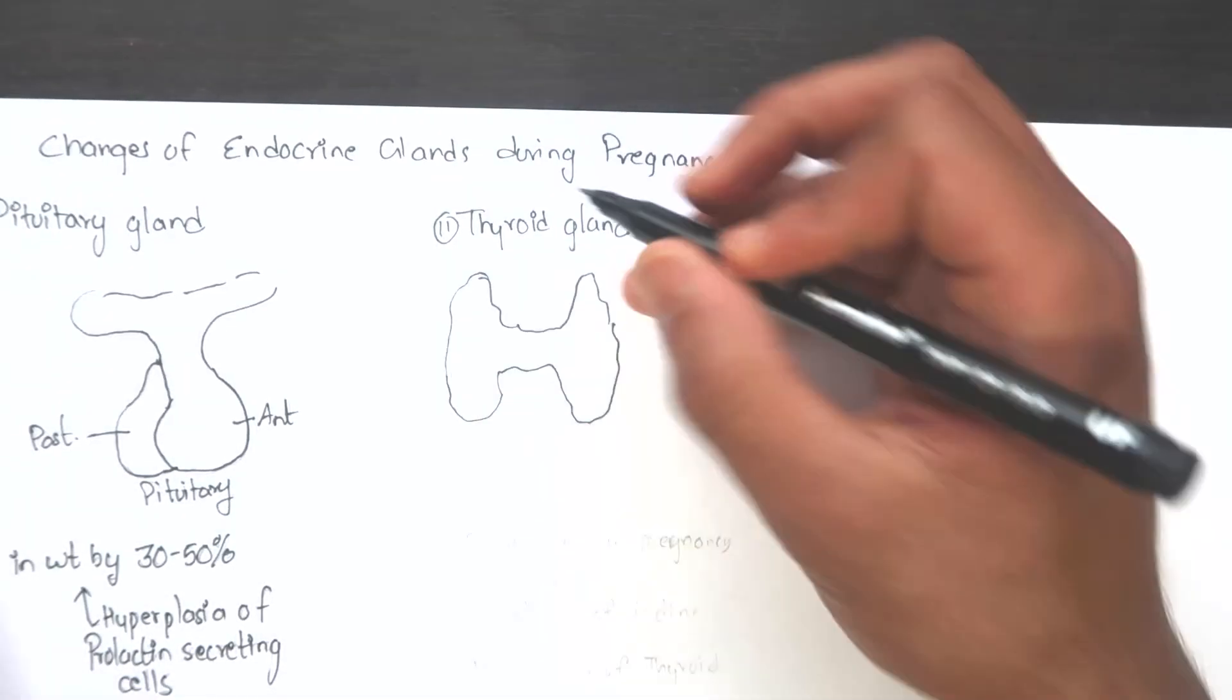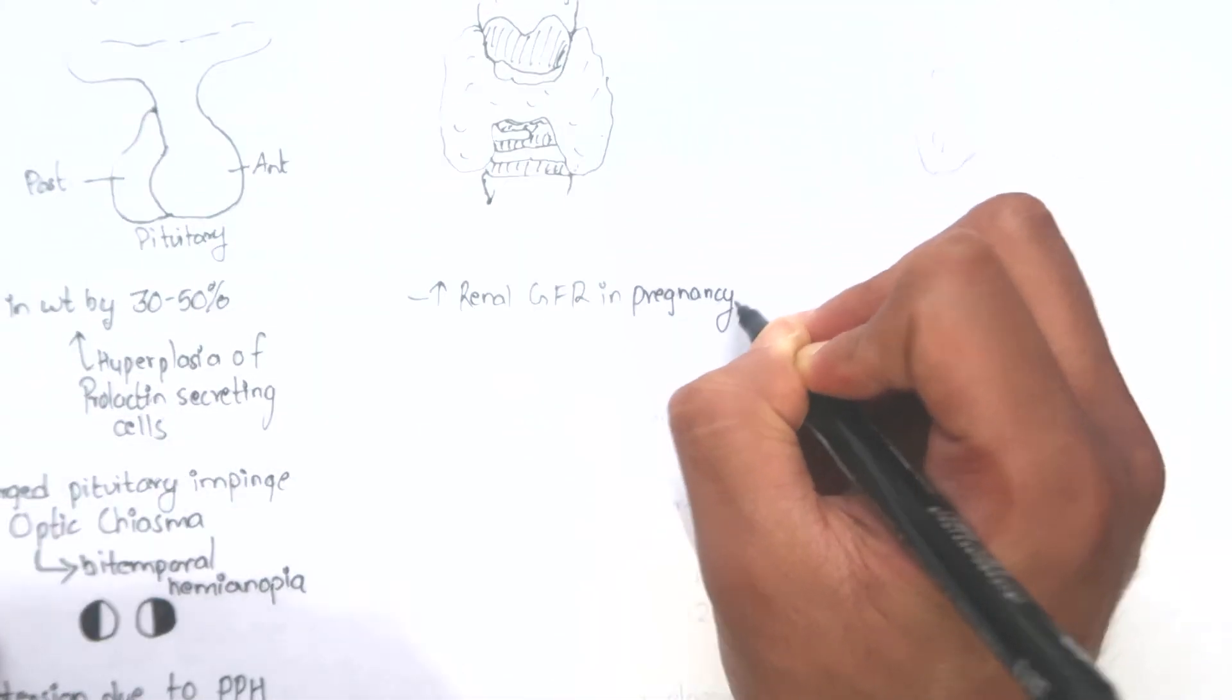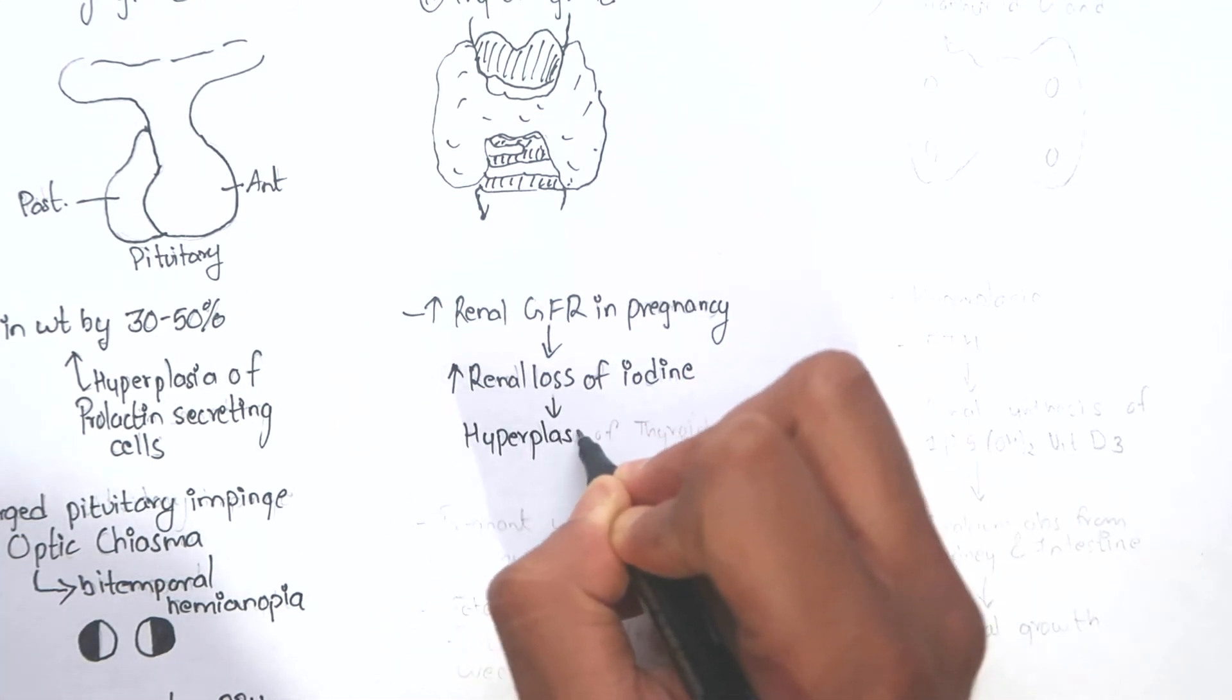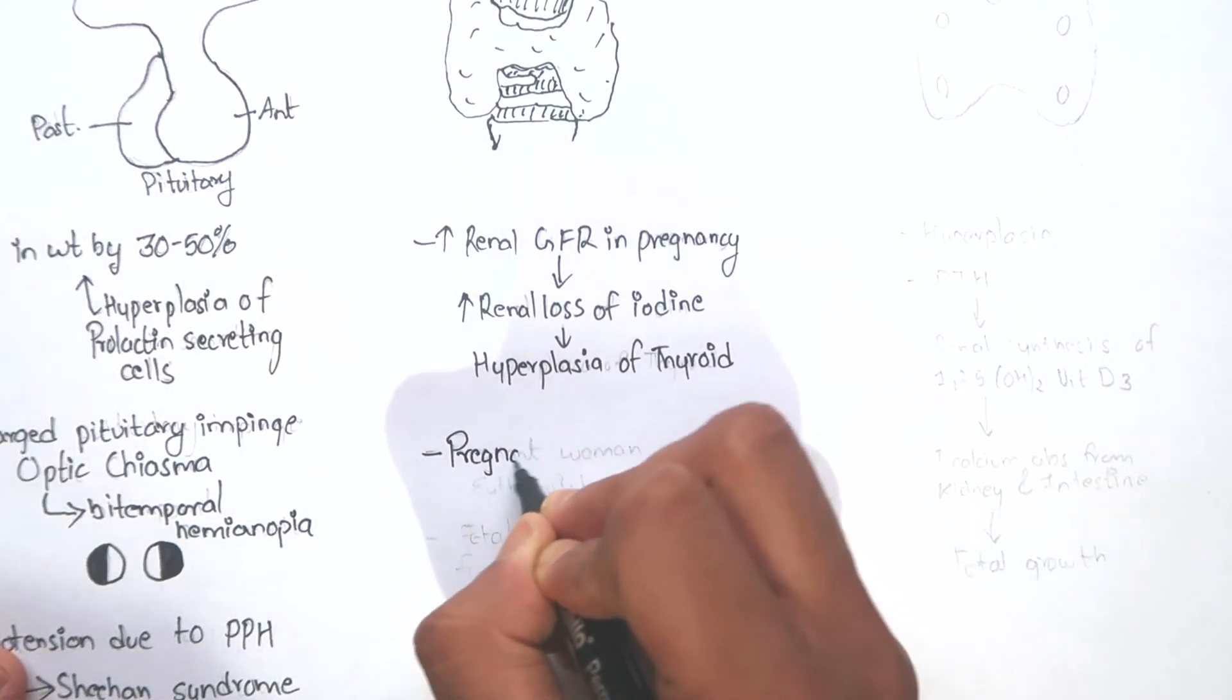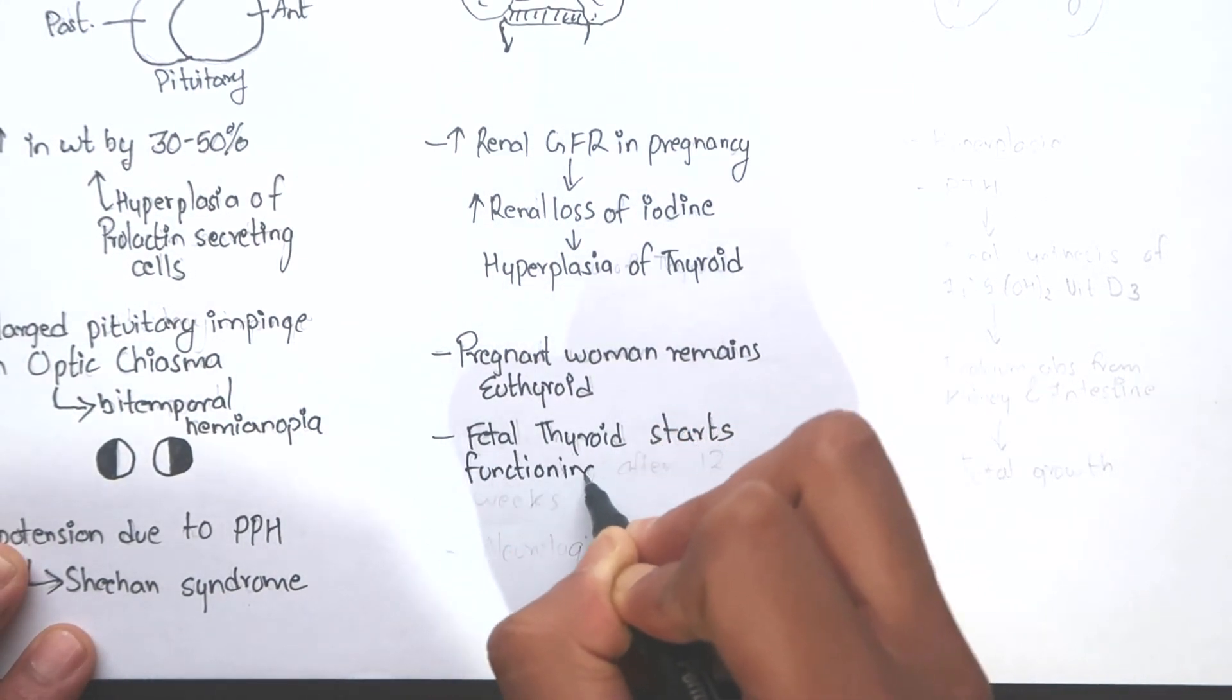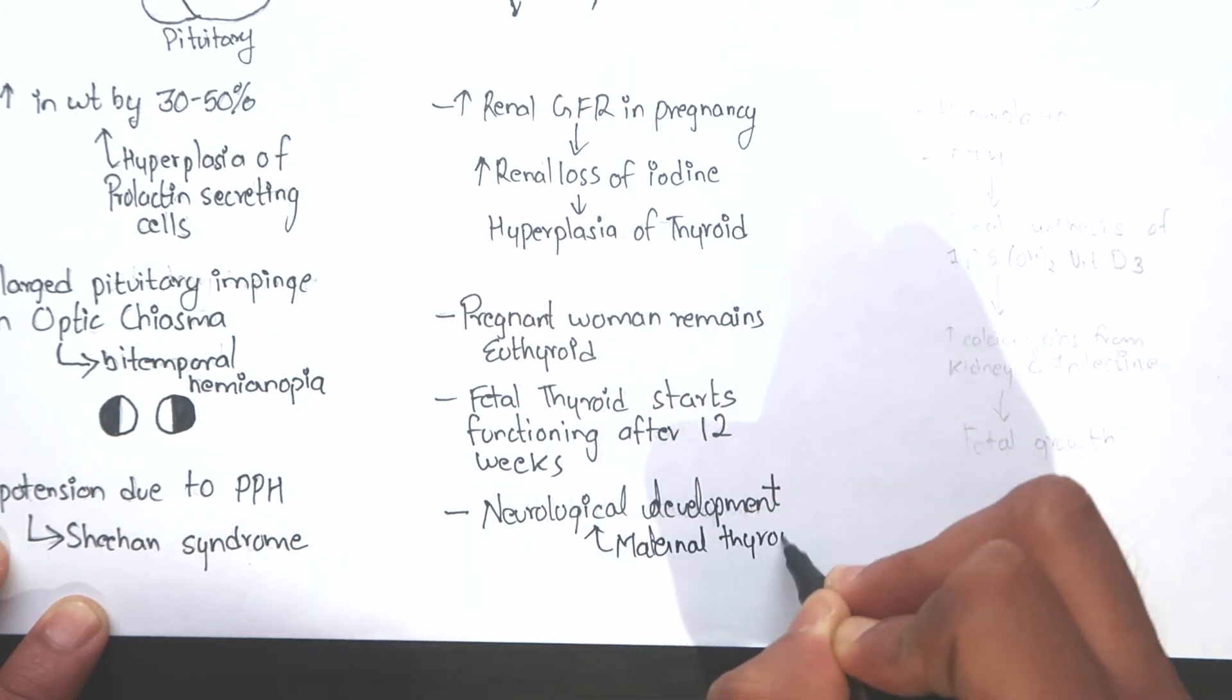Next, on the thyroid gland. Renal clearance of iodine is increased due to increased glomerular filtration during pregnancy. Maternal serum iodine levels fall due to increased renal loss. This causes hyperplasia of the thyroid gland. However, pregnant women remain euthyroid. Fetal thyroid starts functioning after 12 weeks. Till then, the fetus is entirely dependent upon the maternal supply of thyroid hormone through the placenta for all neurologic development.